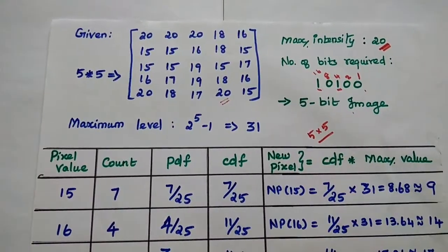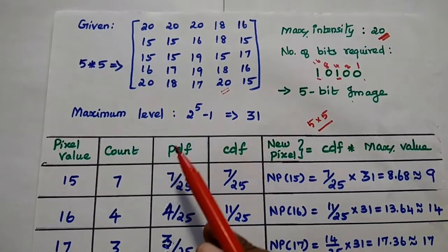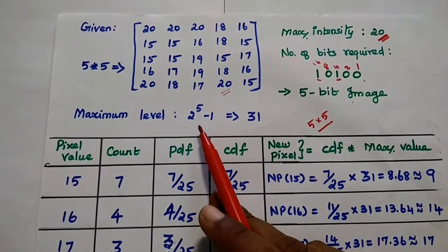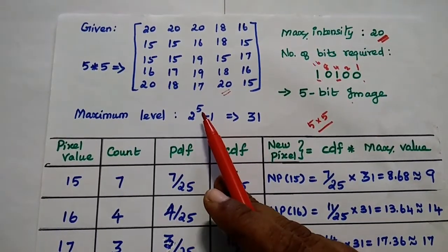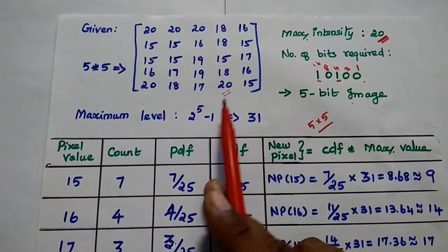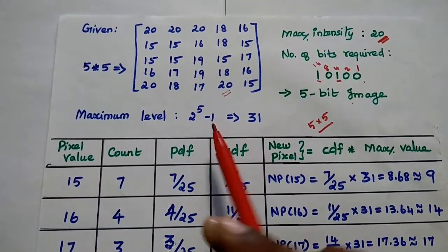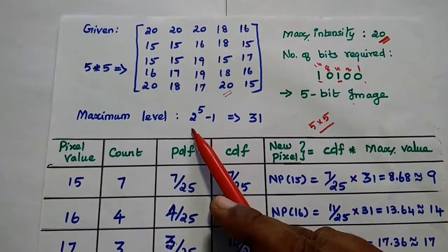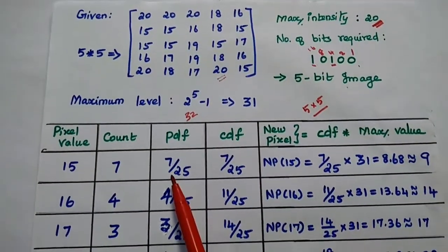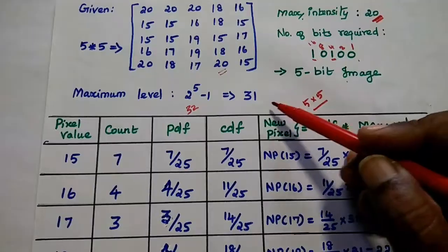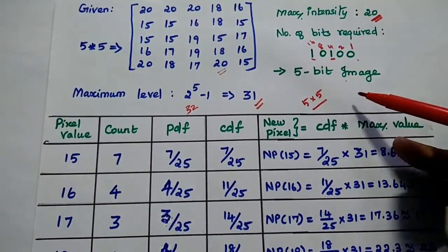Next, we find the maximum level of intensity, which equals 2 to the power 5 minus 1. 2 to the power 5 is 32, so 32 minus 1 equals 31. That is the maximum intensity level of this 5-bit image.